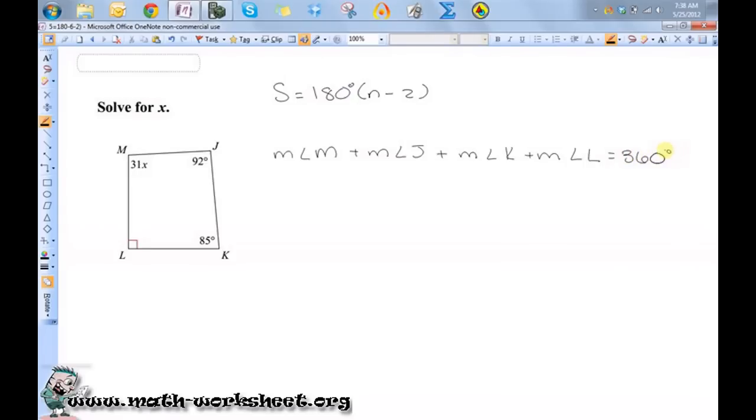Now all I need to do is substitute in these values. The measure of angle M is 31x, J is 92 degrees, K is 85 degrees, and L is 90 degrees equals 360.